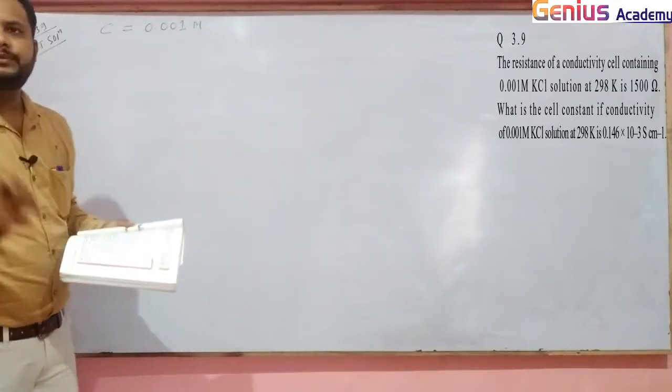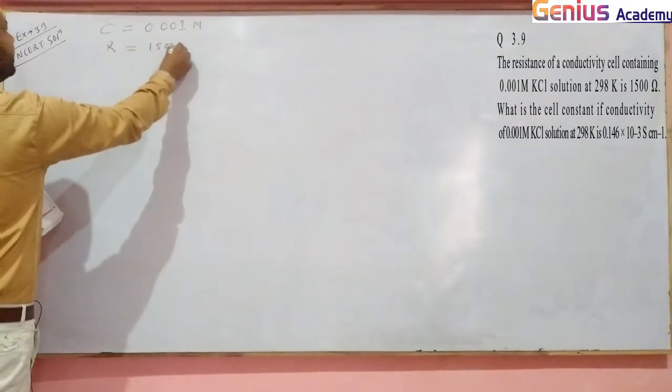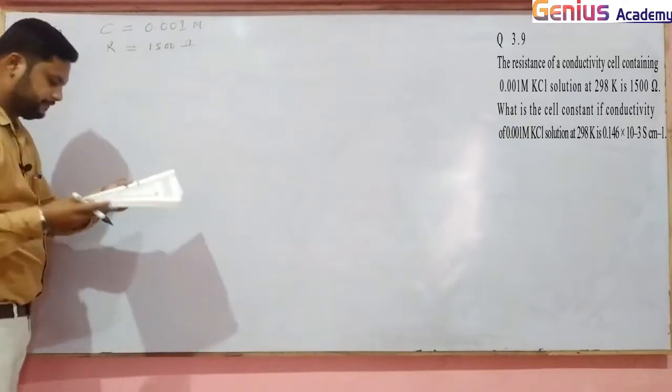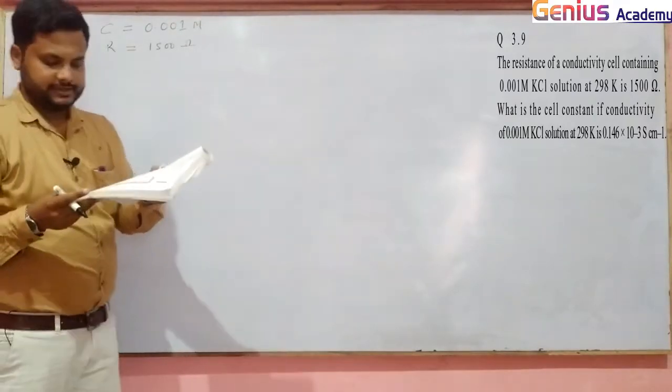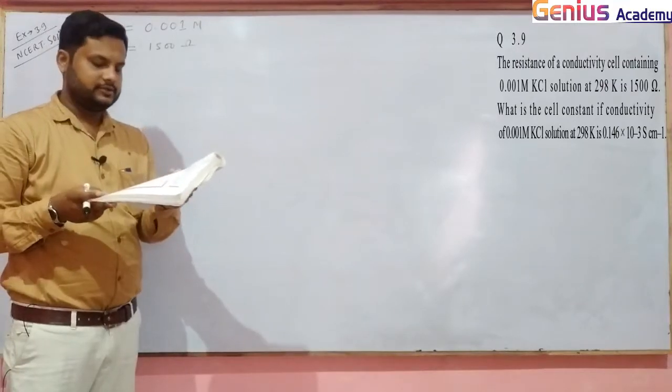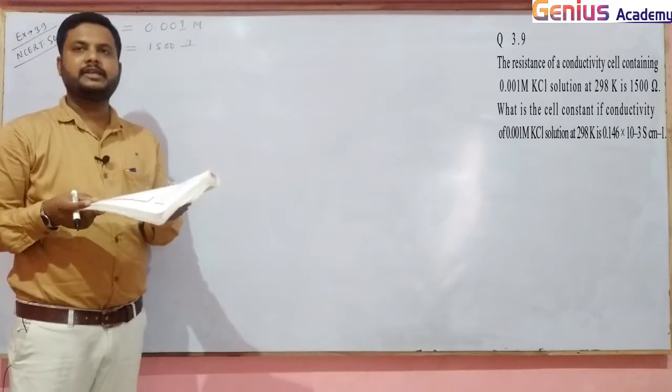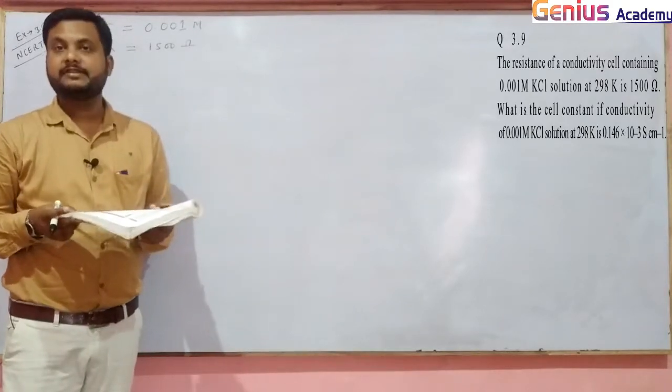resistance is 1500 ohm. What is the cell constant if conductivity of 0.001 molar KCL solution at 298 Kelvin is 0.146 × 10^-3 siemens per centimeter?